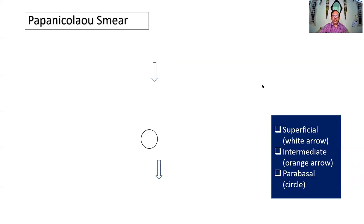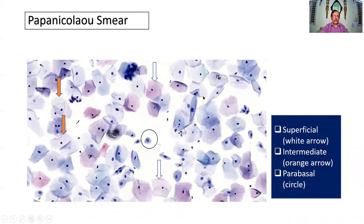Coming to the components of the Pap smear: there are superficial cells, intermediate cells, and parabasal cells. The white arrow indicates the superficial cell — it is a large polygonal cell with a pink or eosinophilic cytoplasm and a pyknotic dot-like nucleus. Large cell, small nucleus — that is how we identify the superficial cell.